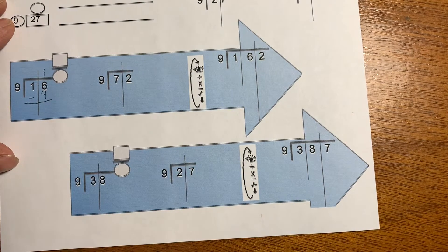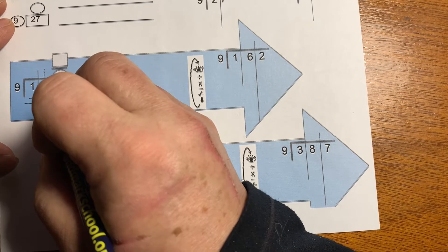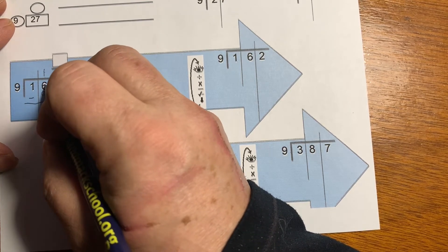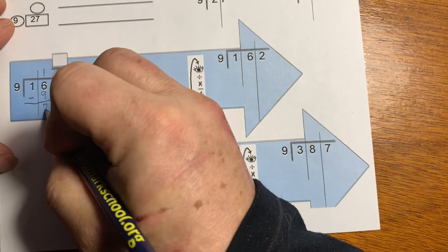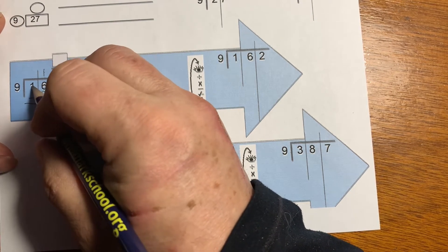When I subtract, I'll have to regroup. How far is 9 away from 16? Well, how far is 9 away from 10? 1, and then 6 more—that makes 7. I can check this by adding up: 7 plus 9 is 16. That's right.